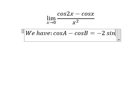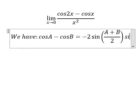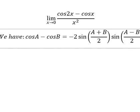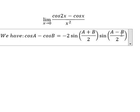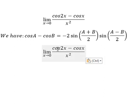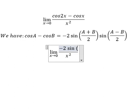So we can apply the formula here. cos 2x minus cos x equals negative 2 sin((2x+x)/2) sin((2x-x)/2).